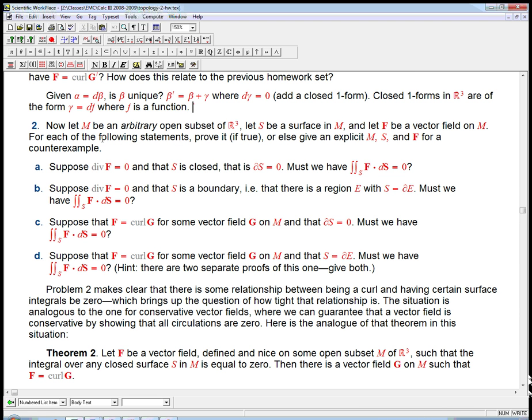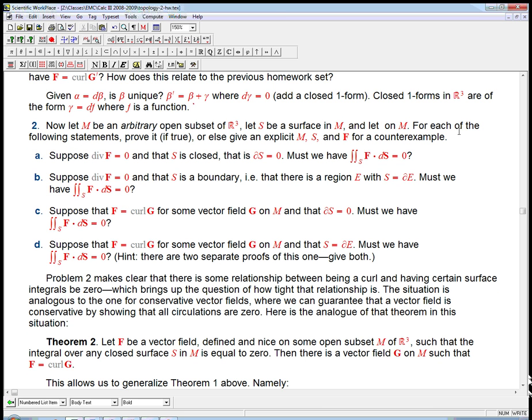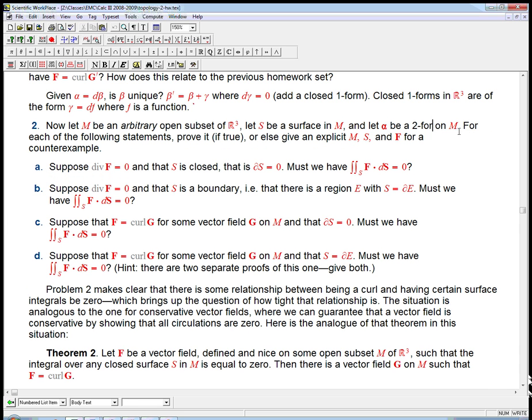So now let's look at the translation number two. M is an arbitrary open subset of R3, S is a surface, and let f be a vector field. Well, that's going to be let alpha be a two-form, because we're going to be taking the divergence of it. So div f equals zero, that's going to translate to d alpha equals zero. It's closed.